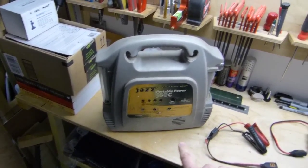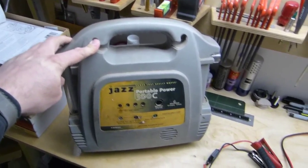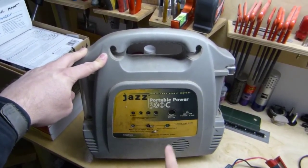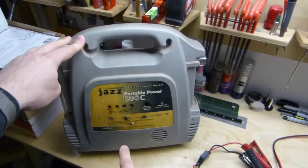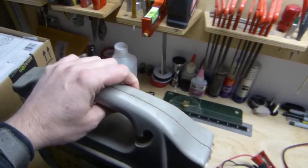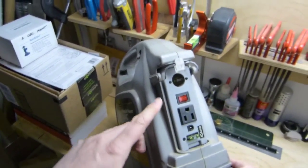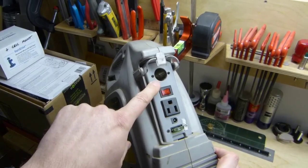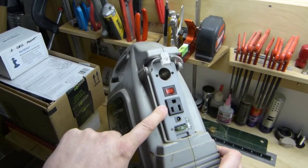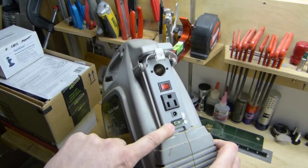So over here I've got an old Xantrex Jazz Power Pack, Jazz 300C, and it's got the usual fluorescent light on one end. You can plug in some jumper cables, and on the other end here you've got the regular 12-volt cigarette lighter output, and it's got a built-in 300-watt inverter in this thing with a fuse.